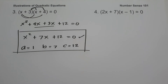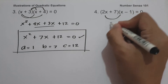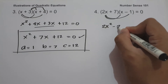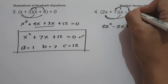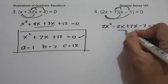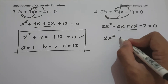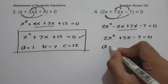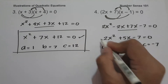On example number four, we have (2x plus 7)(x minus 1) equals zero. Using FOIL: 2x times x is 2x squared, 2x times negative 1 is negative 2x, 7 times x is 7x, and 7 times negative 1 is negative 7 equals zero. Simplifying: 2x squared plus 5x minus 7 equals zero. So a is 2, b is 5, and c is negative 7.